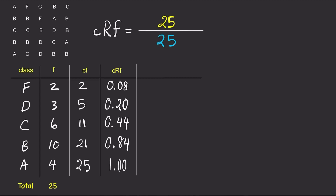A cumulative relative frequency of 0.44 for class C means that 44% of the data points are in C and every class that came before it. In other words, 44% of the grades are either in C, D, or F.